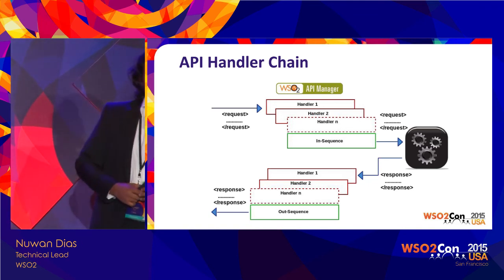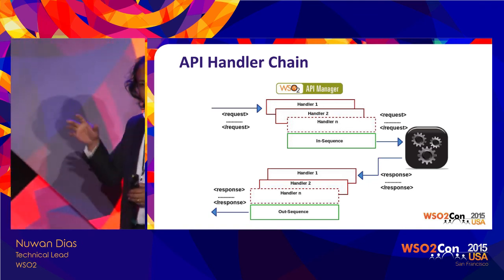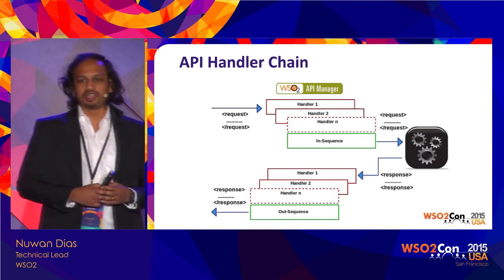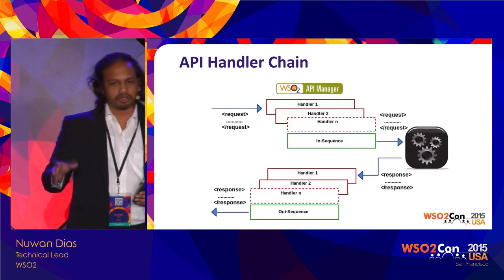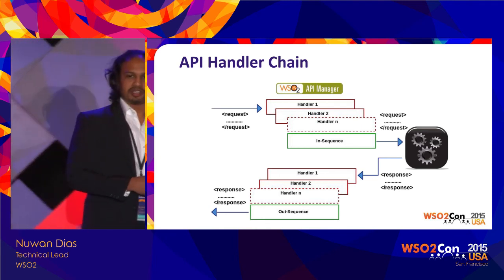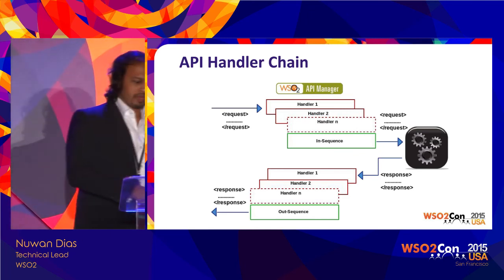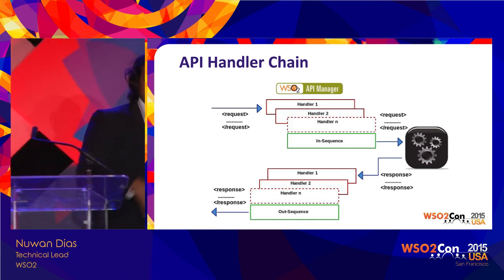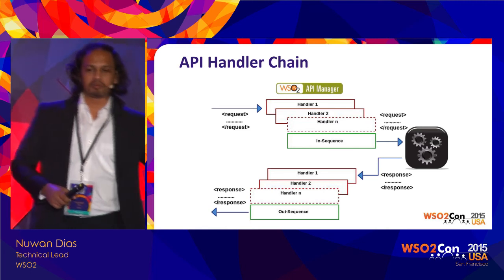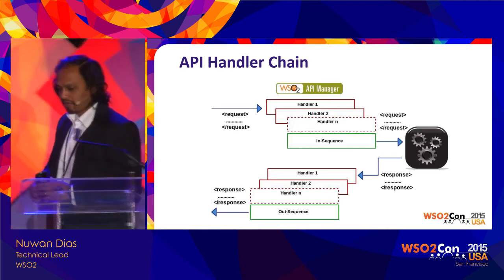The good thing about these handlers is that you could have your own handlers in there — you could write your own, choose to replace one of the existing handlers with one of your own, or even remove handlers you don't want. The handler mechanism is a pretty extensible architecture. For example, if you don't want to do OAuth for your API but want to do basic auth instead, you could remove the OAuth handler and replace it with a basic auth handler.